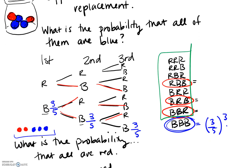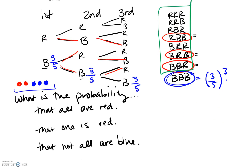In this particular scenario, all red is actually something that could happen, because if we're putting the marbles back we can actually draw a red marble three times. So it's a two-fifths chance of the first one being red, still two-fifths, still two-fifths. So this probability is just going to be two-fifths to the third power — I need three reds and the probability of getting red is two-fifths.